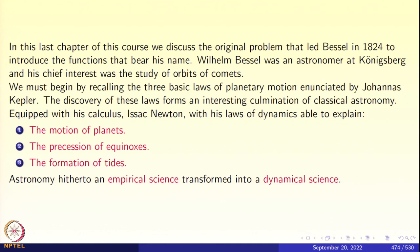In this chapter, we shall discuss the original problem that led Bessel in 1824 to introduce the functions that bear his name. Wilhelm Bessel was an astronomer at Königsberg and his chief interest was a study of orbits of comets. We begin by recalling three basic laws of planetary motion enunciated by Johannes Kepler. The discovery of these laws forms an interesting culmination of classical astronomy.